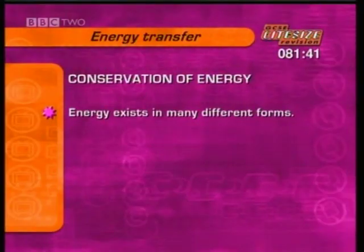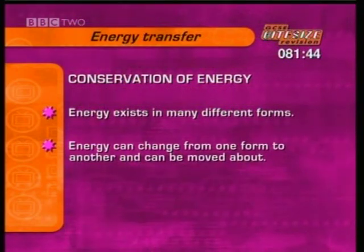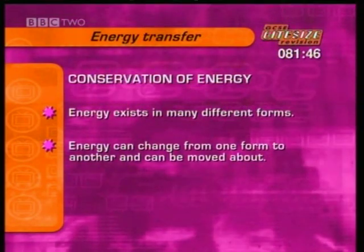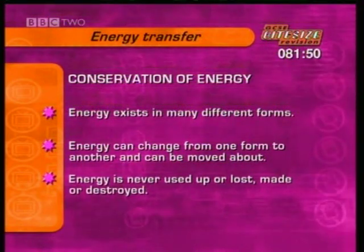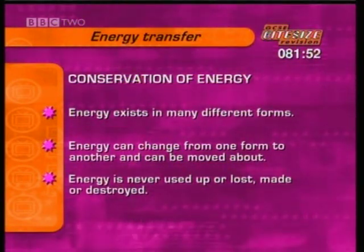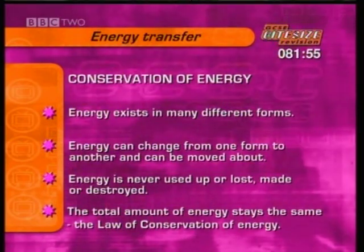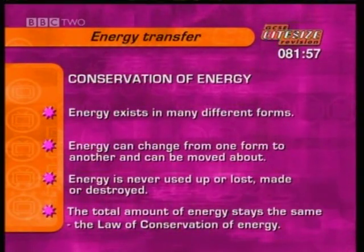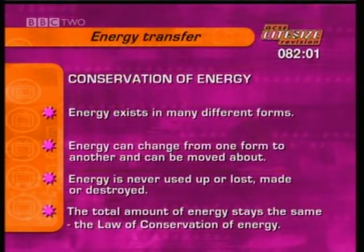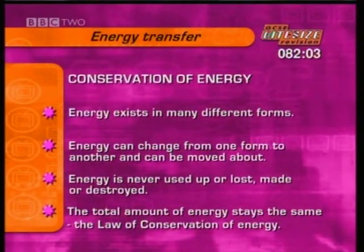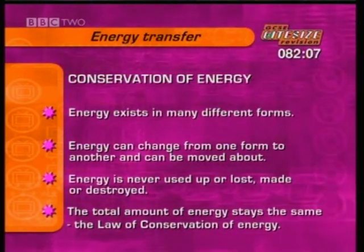Energy exists in many different forms. It can change from one form to another and can be moved about, but is never used up or lost, made or destroyed. The total amount of energy stays the same. That's the law of conservation of energy. As you watch the next clip, note down as many different forms of energy as you can, and how they change from one form to another.